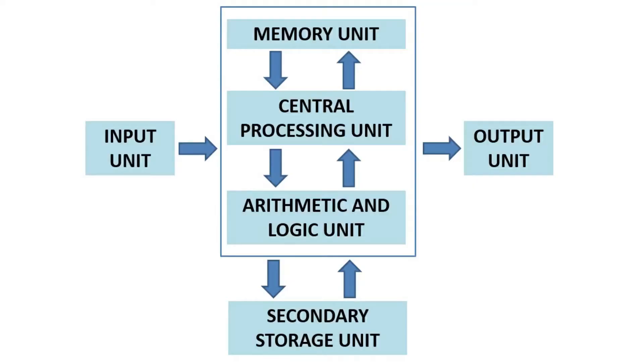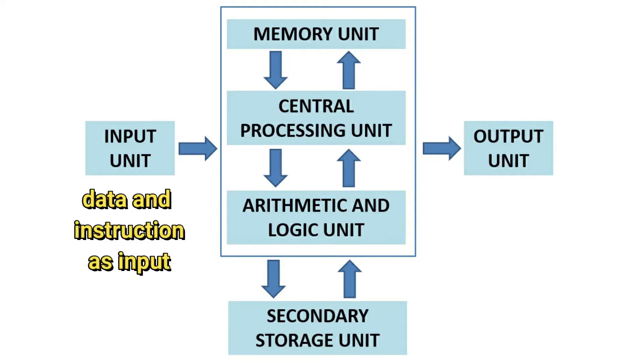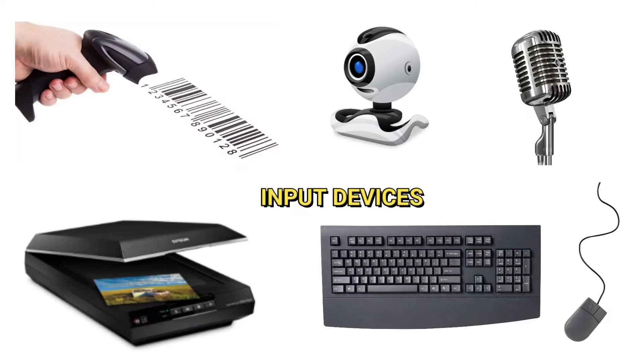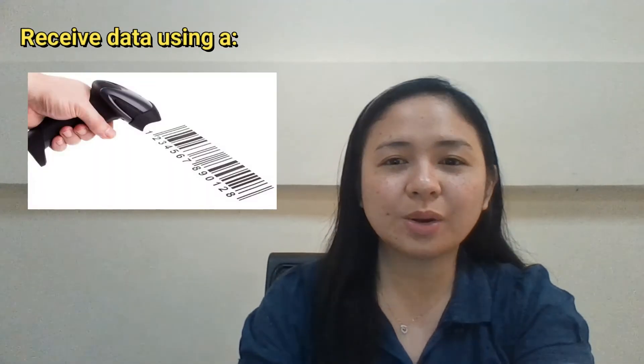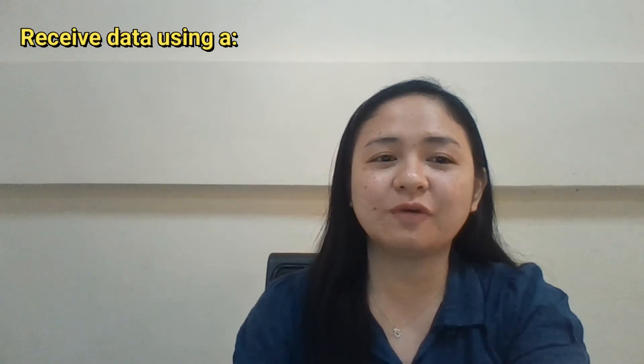The input unit is considered the receiving section, wherein it obtains data and instructions from input devices such as our keyboard and mouse. This data may include the name of a person, a scanned barcode of a product, or even a voice record that can be processed by a computer. Any data captured by input devices is handled in this section — the input unit.